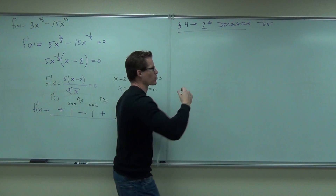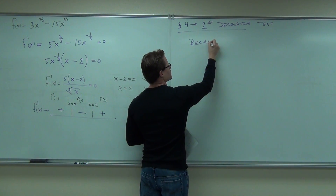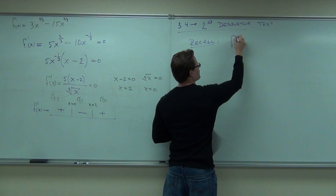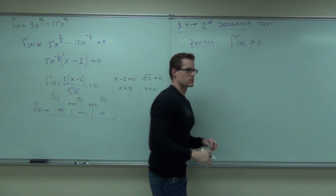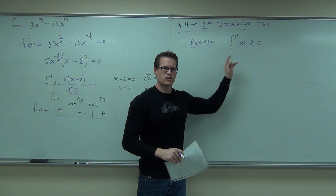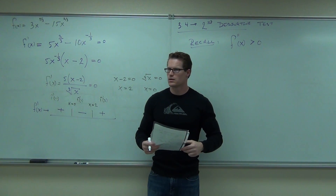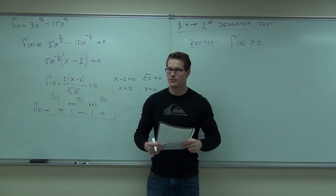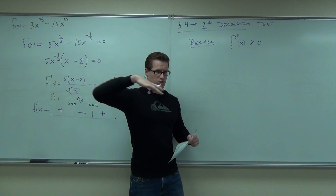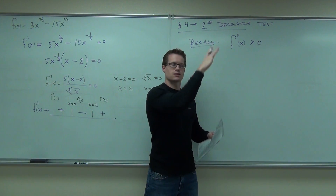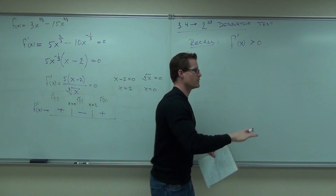Let's just recall how that works — a little refresher. If your second derivative is positive, what does that mean? Concave up. That means your slope is increasing. Slope increasing does this, or does this if you're going downwards, but it's going to be concave up.